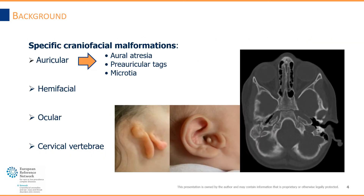These patients often present auricular anomalies, such as the mentioned aural atresia, which can be associated to preauricular tags or microtia. As you can see from these drawings, the anomalies are easily detectable in clinical practice and by means of imaging.